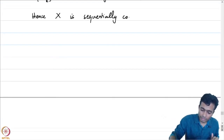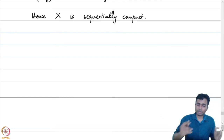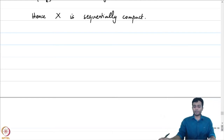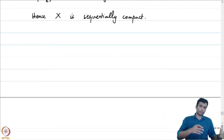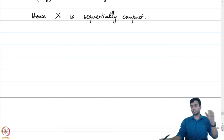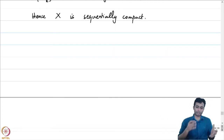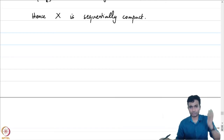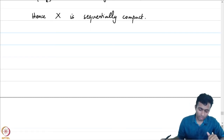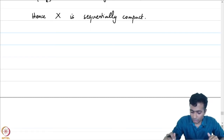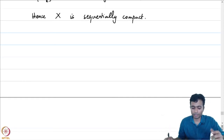What have we proved so far? We have proved: starting with a compact metric space it is necessarily limit point compact; starting with a limit point compact metric space it is necessarily sequentially compact. The circle of ideas will be complete if we show that any sequentially compact metric space is necessarily compact. To do that, we need a tool called the Lebesgue number lemma.